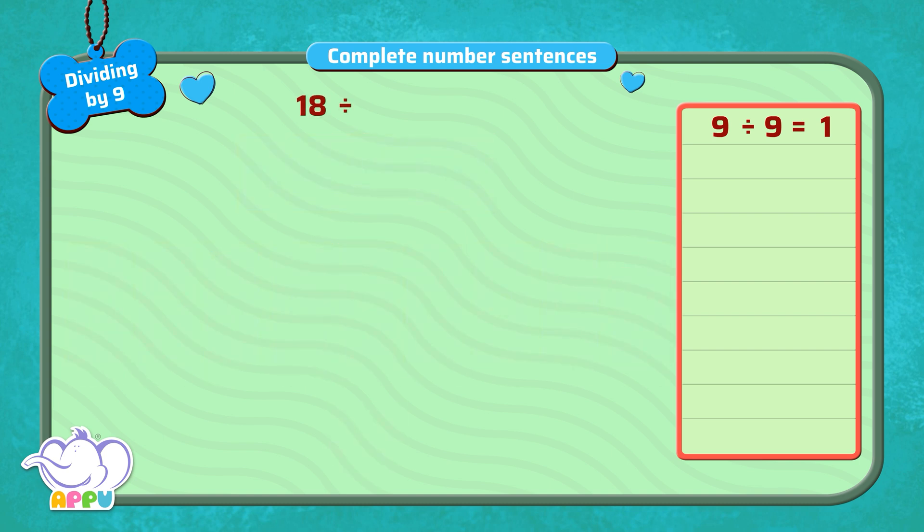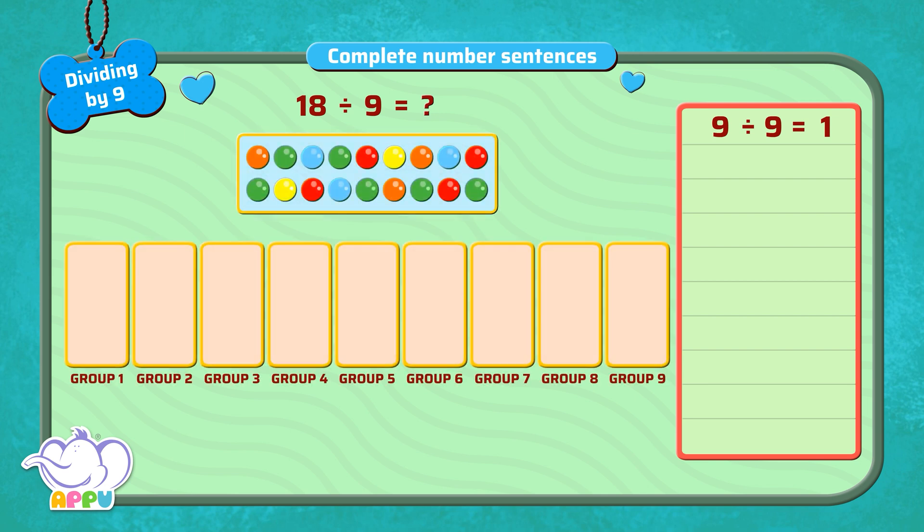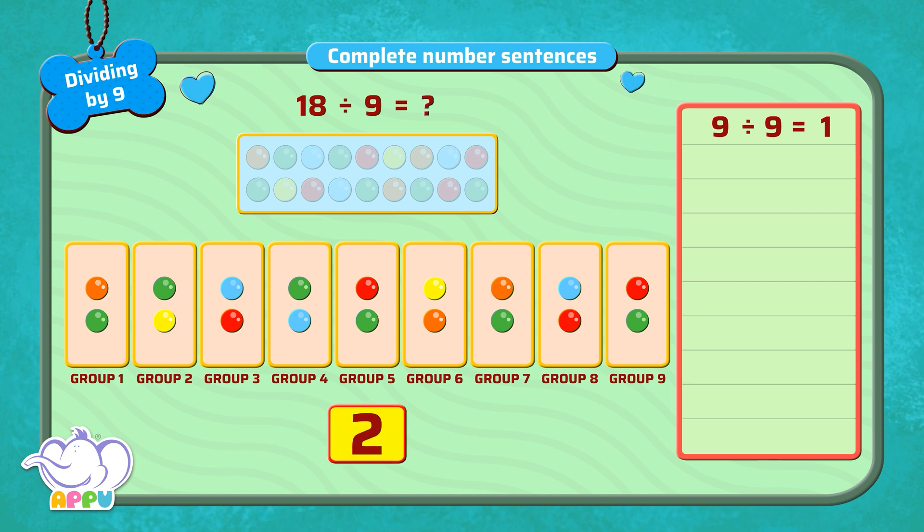What is 18 divided by 9? When we divide 18 beads equally into 9 groups, we get 2 beads in each group. So the answer is 2.